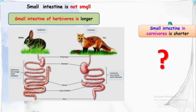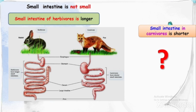The small intestine of herbivores is longer than that of carnivores. This is because herbivores eat leaves and grass containing cellulose, which is complex and requires more time to digest. Carnivores eat flesh, which is more easily digested, so their small intestine is shorter.